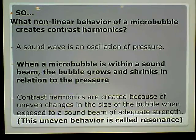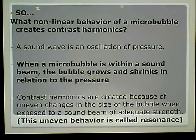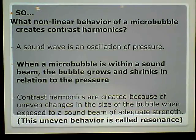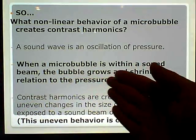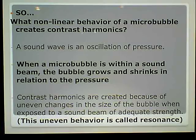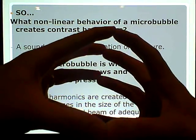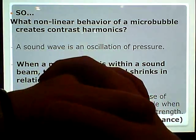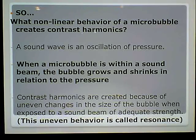An oscillation is a movement — when something oscillates, it goes back and forth, like an oscillating fan. When a micro bubble is within a sound beam, the bubble grows and shrinks in relation to the pressure. It grows and shrinks. Contrast harmonics are created because of uneven changes in the size of the bubble when exposed to a sound beam of adequate strength.